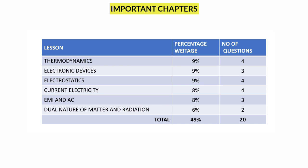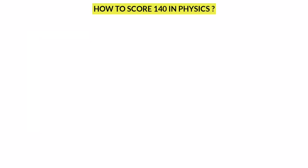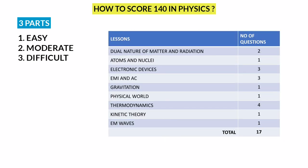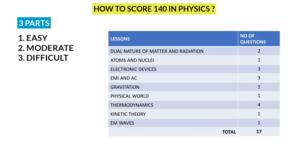Next, how do you score 140 easily in physics? Let's divide the chapters in physics into easy chapters, moderate chapters, and difficult chapters. First, easy chapters. There are 9 chapters. In these chapters, it's very easy to understand the concepts. In this chapter, there are 15 to 20 questions.